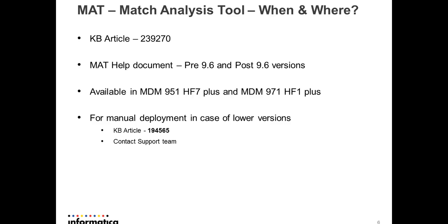The match analysis tool is available from MDM version 951HF7 and above, and also from 971HF1 and above. It is accessible via the Help menu > MDM Support Tool or through the Enterprise Manager. If you want to manually deploy the EAR file and are on a version below 951HF7 or 971HF1, you can refer to KB article 194565, or contact the support team for assistance with manual deployment.